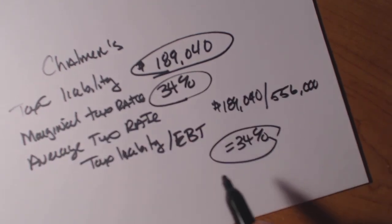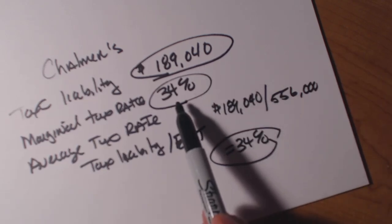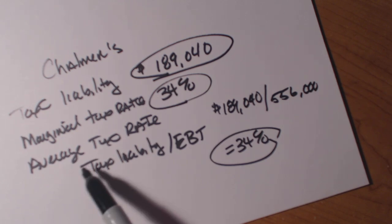So in this particular video, what we looked at was Chalmers as a continuation of the tax liability, how to find the marginal tax rate, and how to calculate the average tax rate as well.